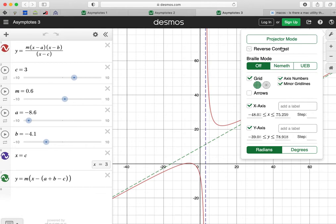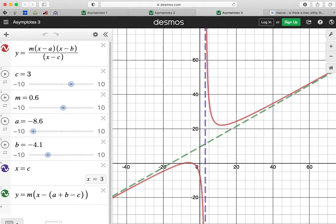And here's the last function I'm going to have a look at just now. And that's got one of these sloping asymptotes called oblique asymptotes.